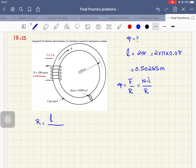So let's find the reluctance together. The reluctance is equal to the length that we already found over mu multiplied by cross sectional area. So L is 0.50265 meter over.